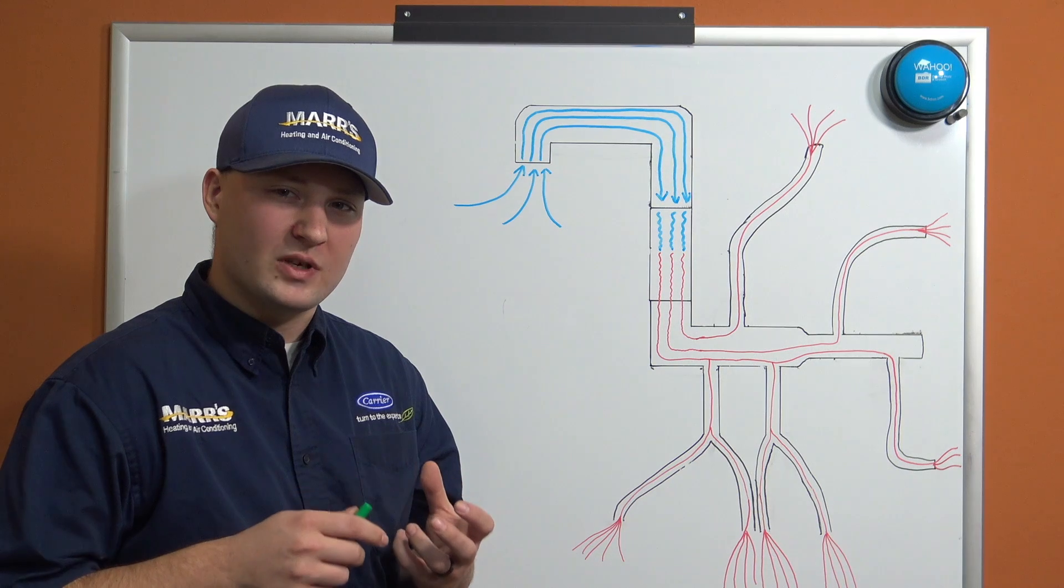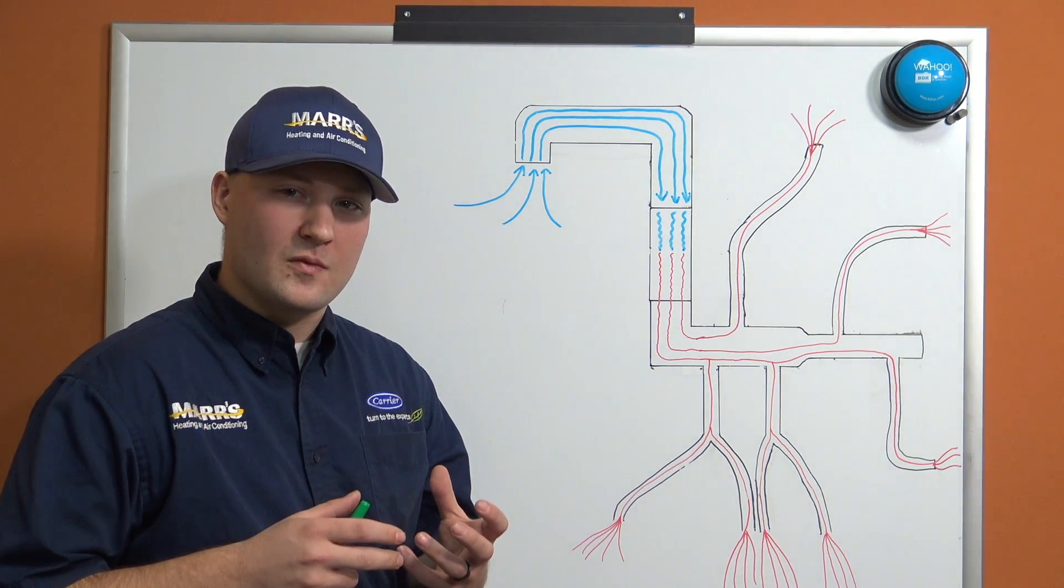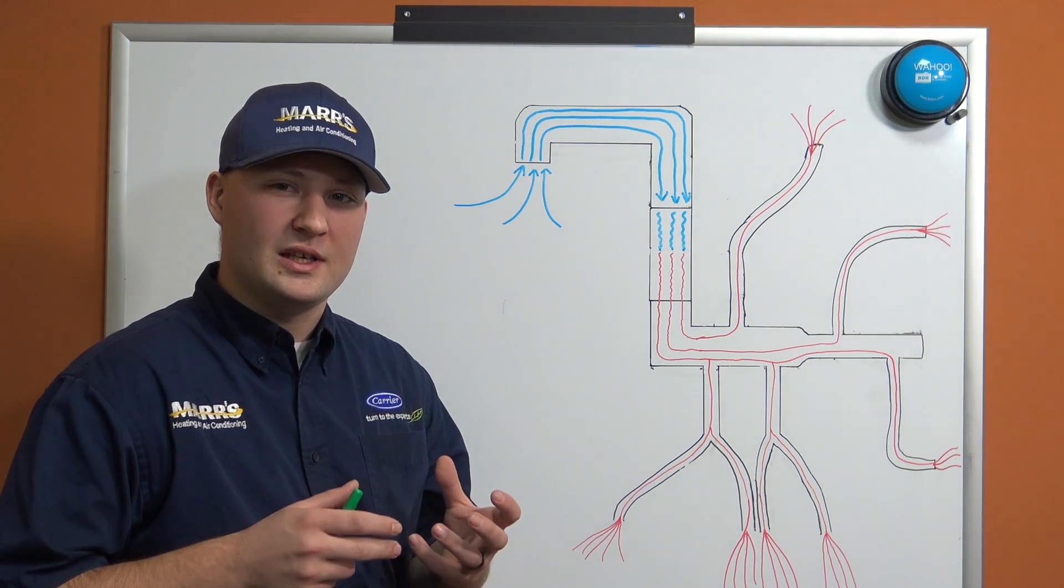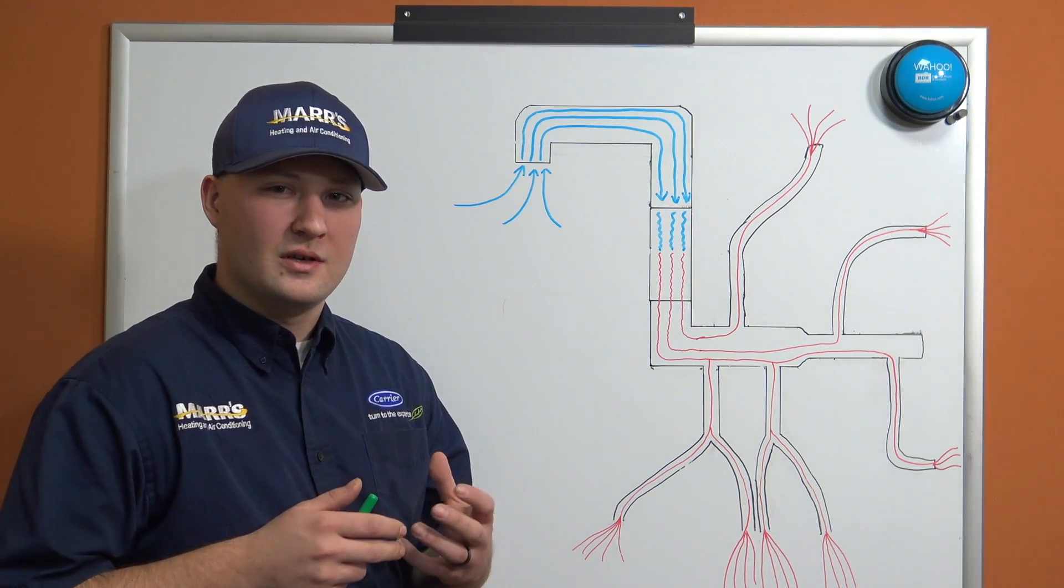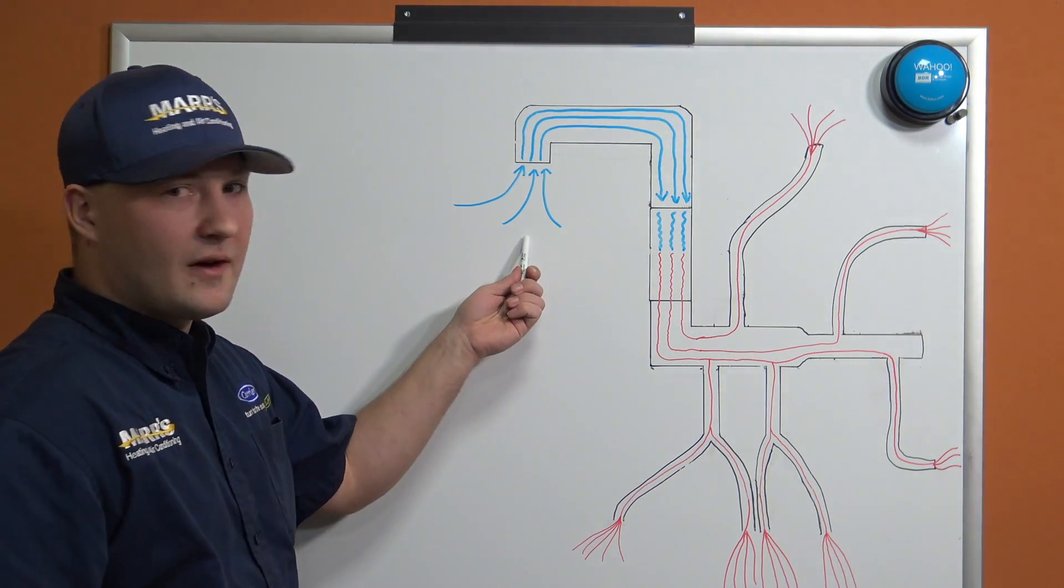In an ideal system, we want to be able to move air freely and without restriction. So I've kind of drawn out a diagram here, and basically we'll start over here. Over here we have our return air.